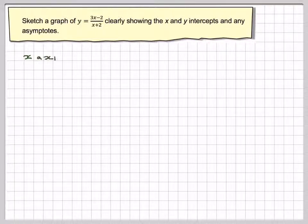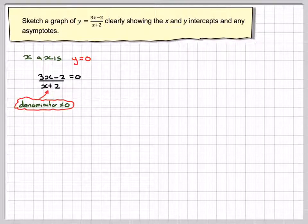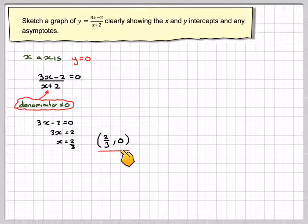First we'll look at the x-axis. On the x-axis y equals 0, so we'll put y equals 0 in this equation. We've got 3x minus 2 divided by x plus 2 equals 0. Now the denominator cannot equal 0, so the only part that can equal 0 is 3x minus 2. Setting 3x minus 2 equal to 0 gives 3x equals 2, so x equals 2/3. The curve goes through the point (2/3, 0).